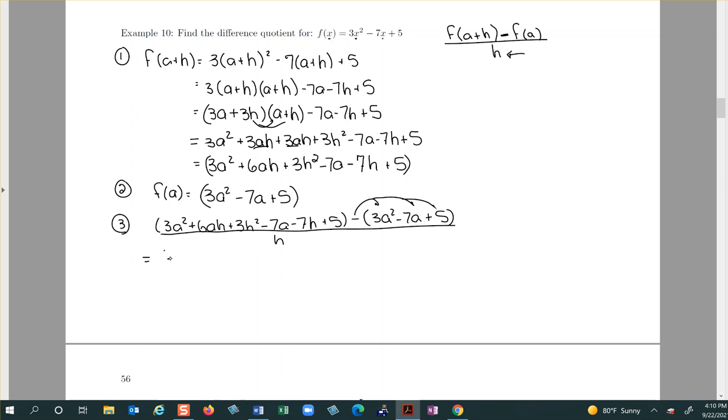All right, so I have the three a squared plus six a h plus three h squared minus seven a minus seven h plus five. Distribute the negative, so that's going to change all the signs inside the parentheses to their opposites.